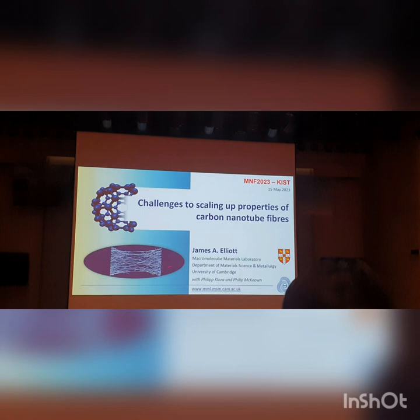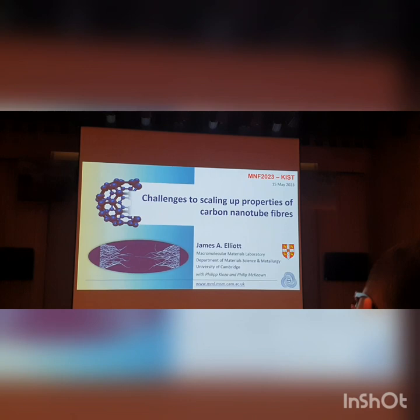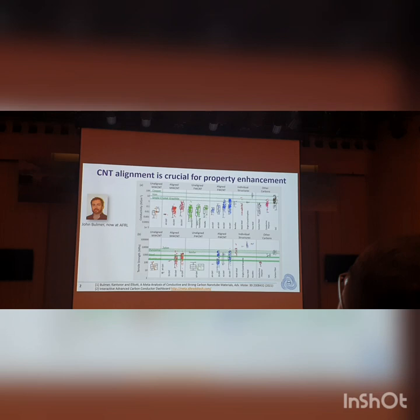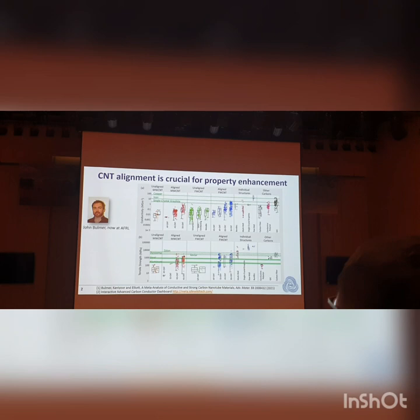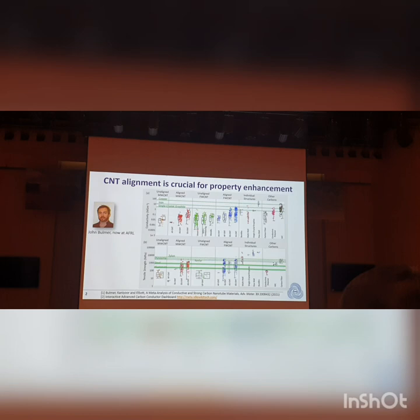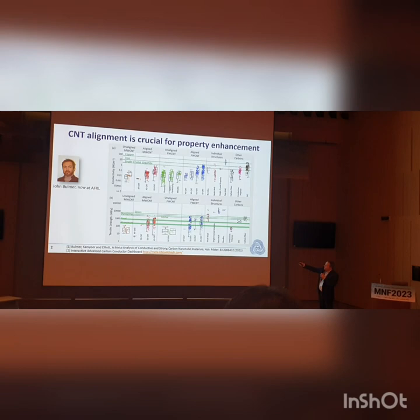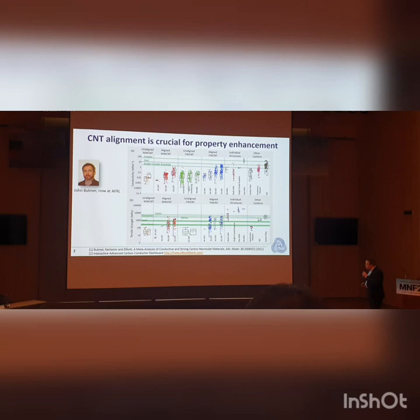To address the challenge laid out by the plenary speaker — how do we realize the properties of individual tubes in a macro assembly — one of the key things is alignment. This is a nice study which John Bulmer led when he was in Cambridge: a meta-analysis of nearly 300 different papers summarizing the effect of alignment of various carbon-based structures, from graphite intercalation compounds and carbon fibers to single nanotube fibers, looking at the effect on tensile strength and conductivity of having unaligned versus aligned structures.